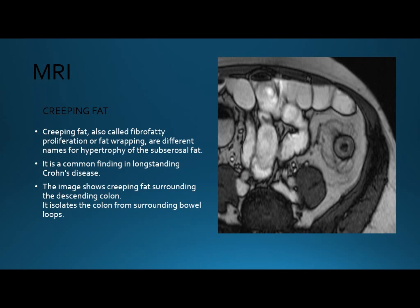The special sign is the creeping fat sign, also called fibro-fatty proliferation or fat wrapping — different names for hypertrophy of the sub-serosal fat. This is common in longstanding chronic disease. This image shows creeping fat around the descending colon, and this fat separates the bowel from the other bowel loops.